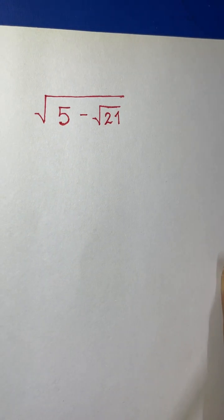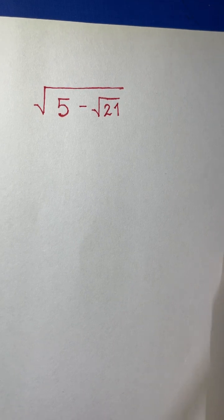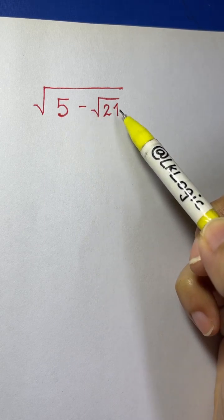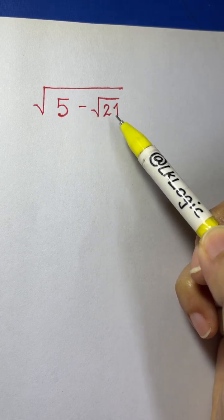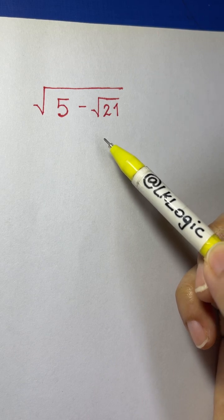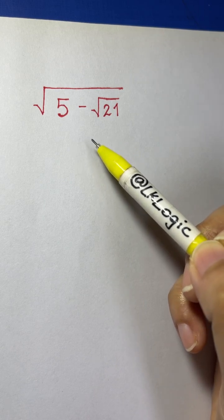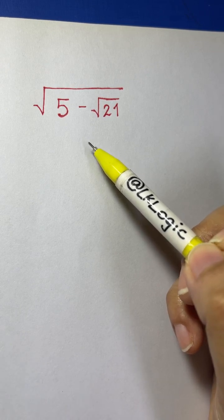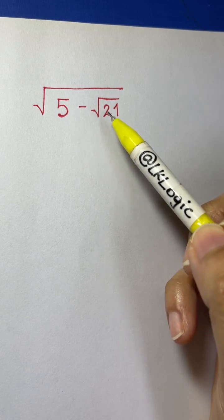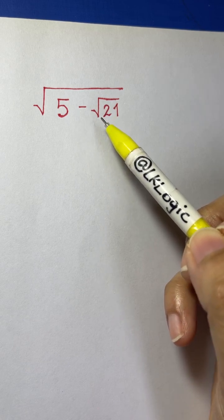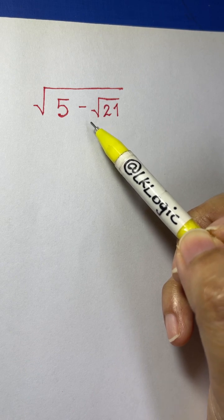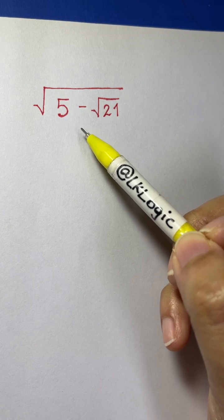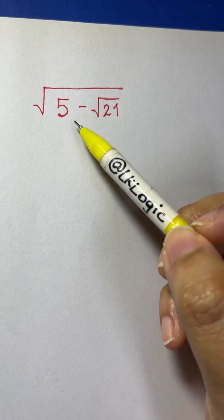Hi everyone. In this question we need to simplify the square root of 5 minus square root of 21. There are many methods for solving this kind of question, but today we are going to use one of the best methods for dealing with these kinds of questions.